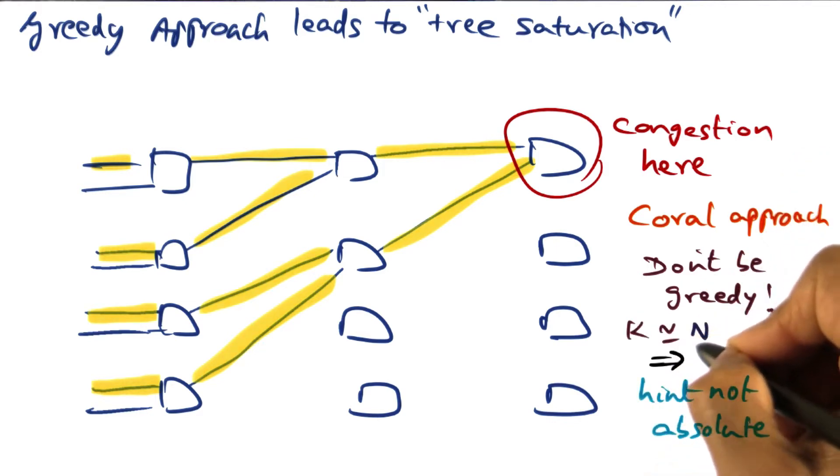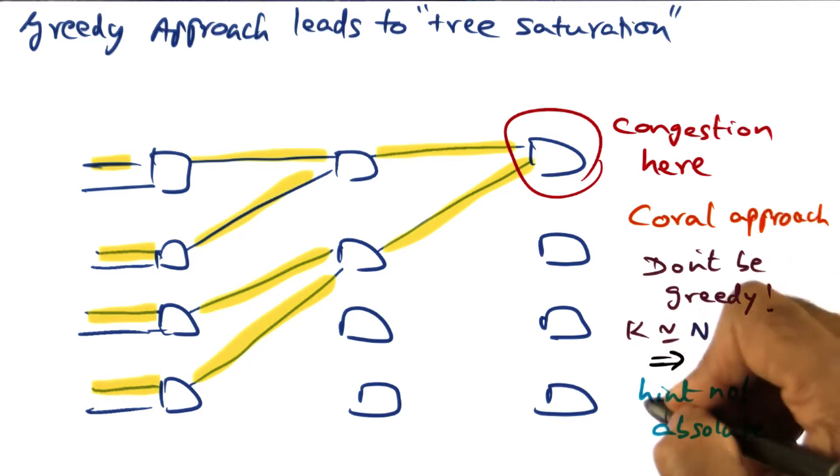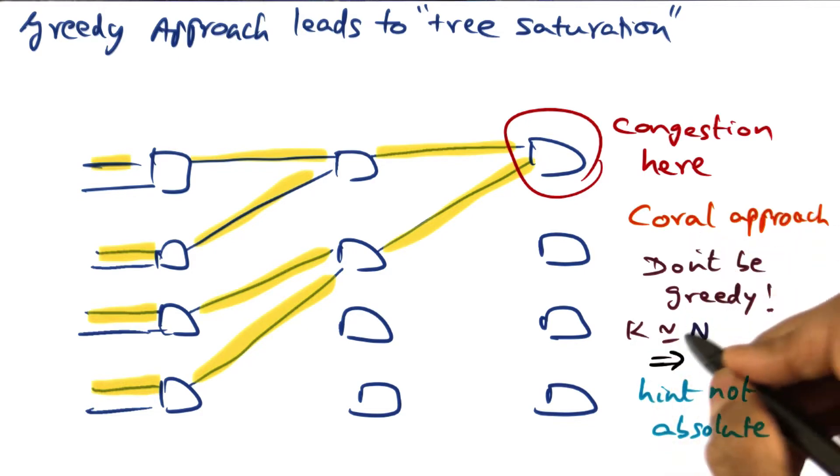What does that mean? Well, what it means is in the greedy approach, when we have a key k, we try to store it in a node n whose node ID is equal to k. In the chordal approach, use this as a hint, not an absolute.